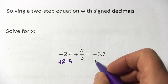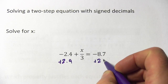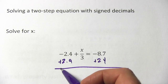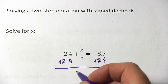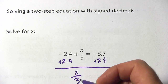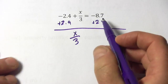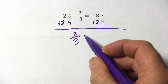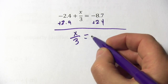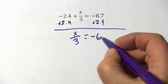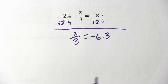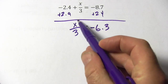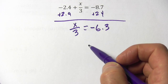I just add 2.4 — of course I have to add it to both sides. So over here, negative 2.4 plus 2.4 is 0, so I just get x over 3. And over here, negative 8.7 plus 2.4 should be negative 6.3. Double check that on your calculator if you're not sure. So I have x over 3 equals negative 6.3.